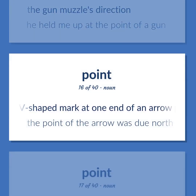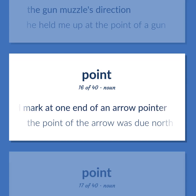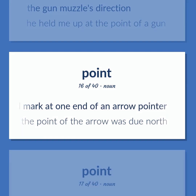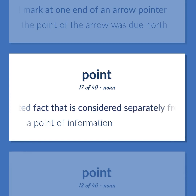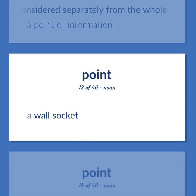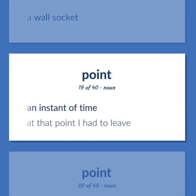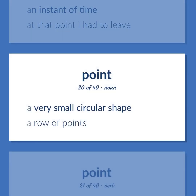Point: A V-shaped mark at one end of an arrow pointer — the point of the arrow was due north. An isolated fact that is considered separately from the whole — a point of information. A wall socket. An instant of time — at that point I had to leave. A very small circular shape — a row of points.